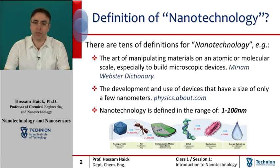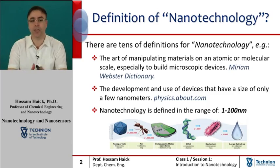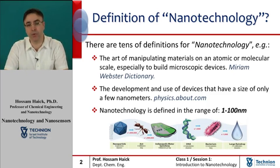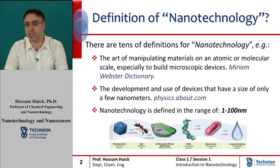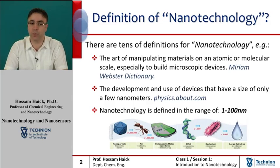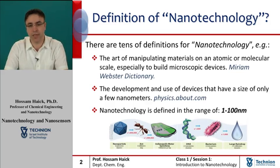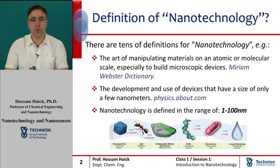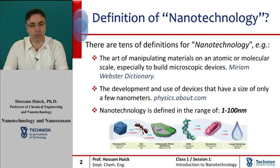The idea and concept behind nanotechnology started with a talk entitled 'There is Plenty of Room at the Bottom' by physicist Richard Feynman at the American Physical Society meeting at the California Institute of Technology, Caltech, in 1959. In his talk, Feynman described a process in which scientists would be able to manipulate and control individual atoms as well as individual molecules.